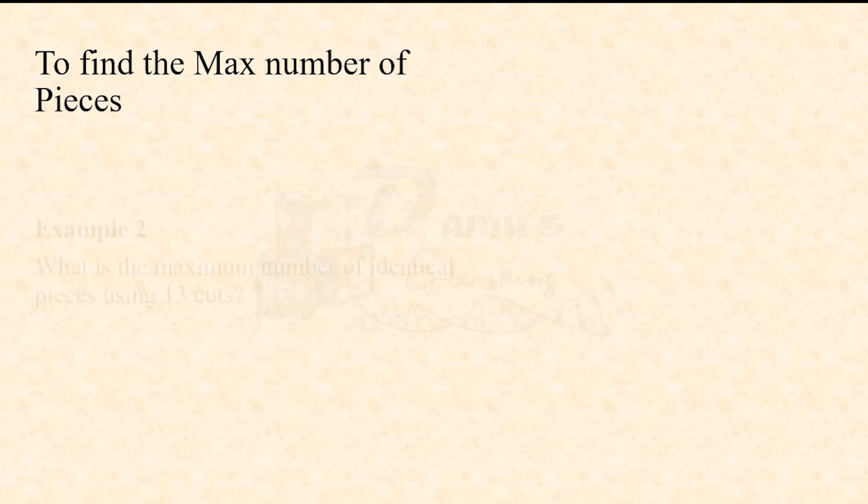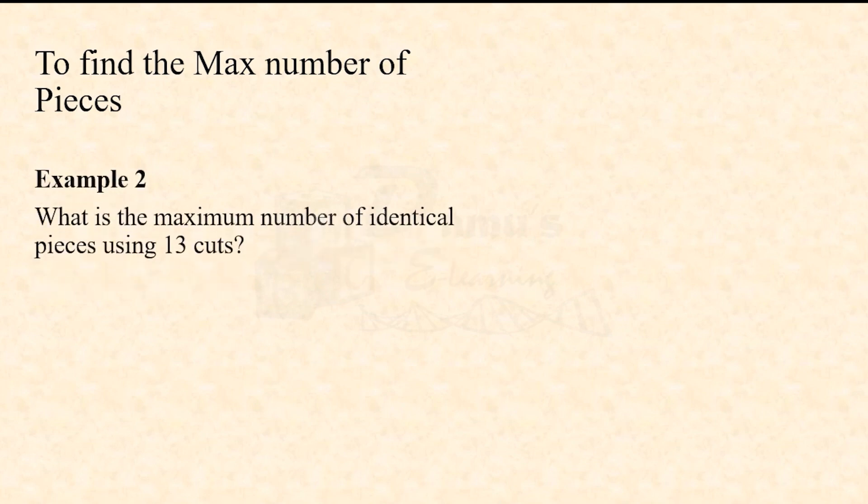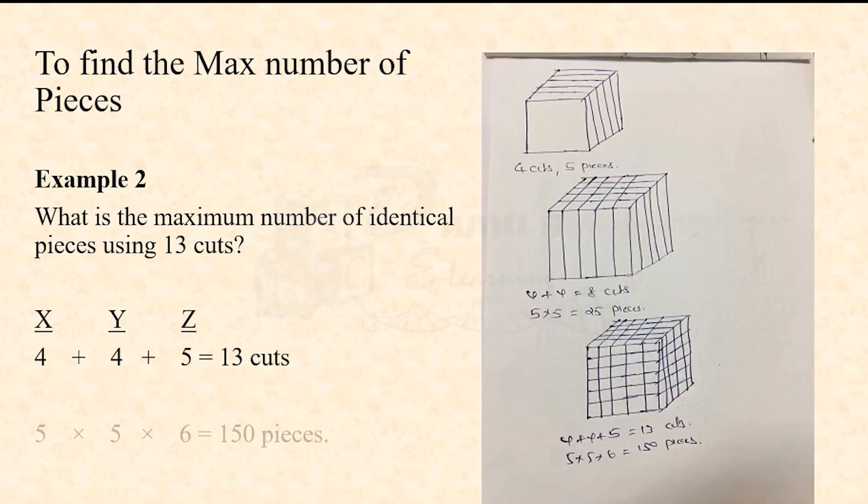Example 2: What is the maximum number of identical pieces using 13 cuts? Now this 13 we have to divide as sum of three consecutive numbers that is maximum consecutive, so we can write it as 4+4+5, giving 13 cuts. Four cuts means five pieces, so along X and Y direction it is 5, and in Z it is 6. So 5×5×6 equals 150 pieces.